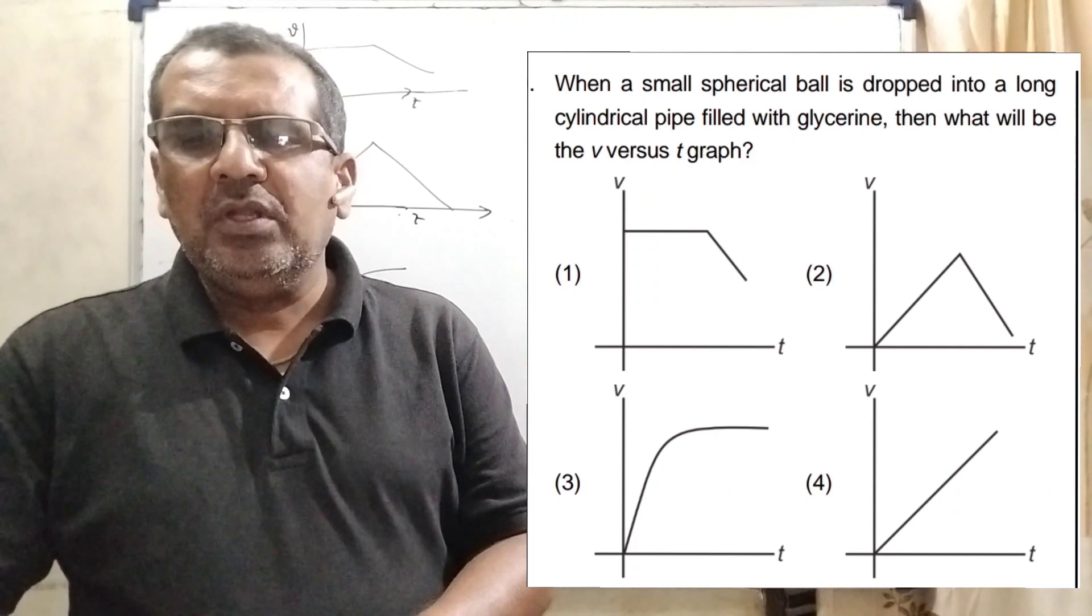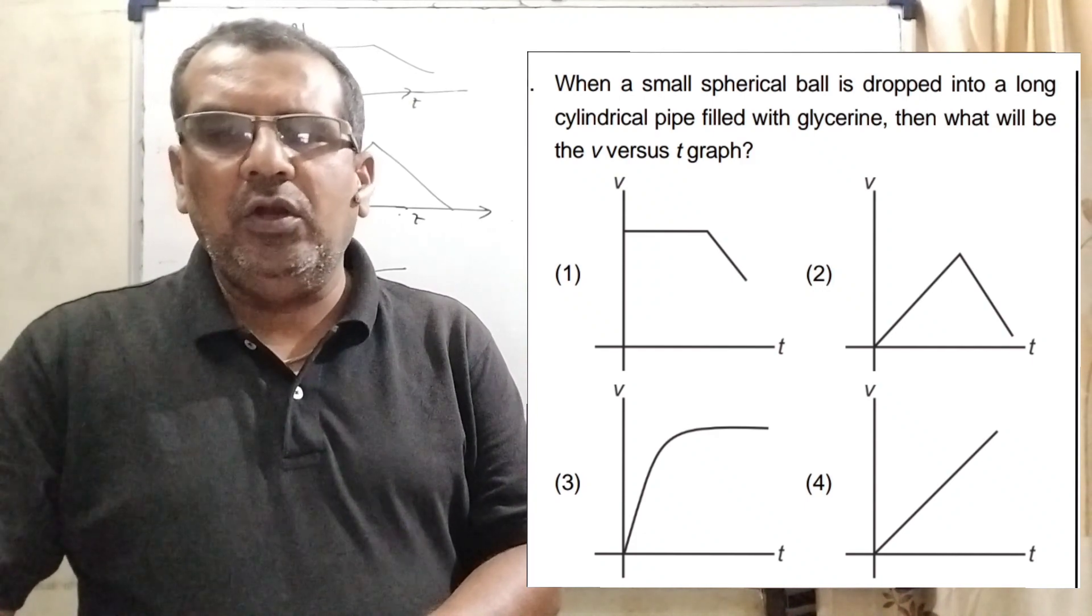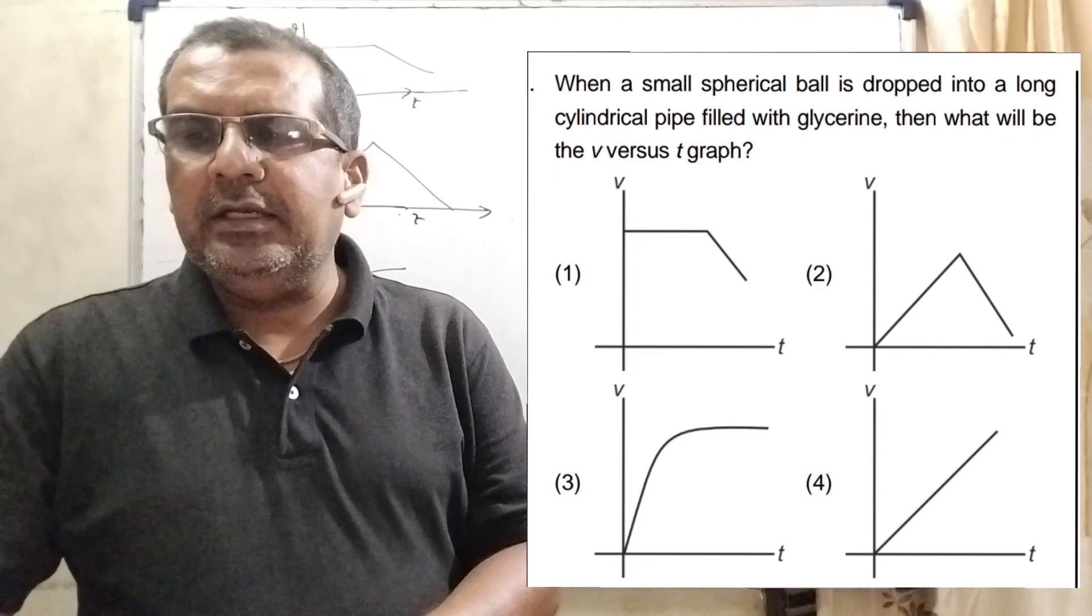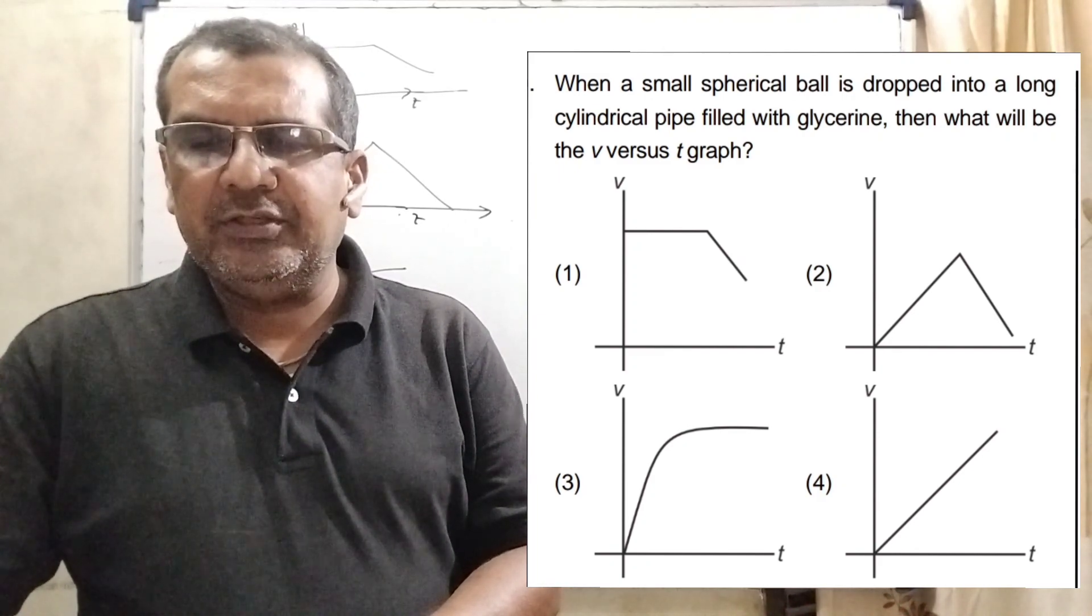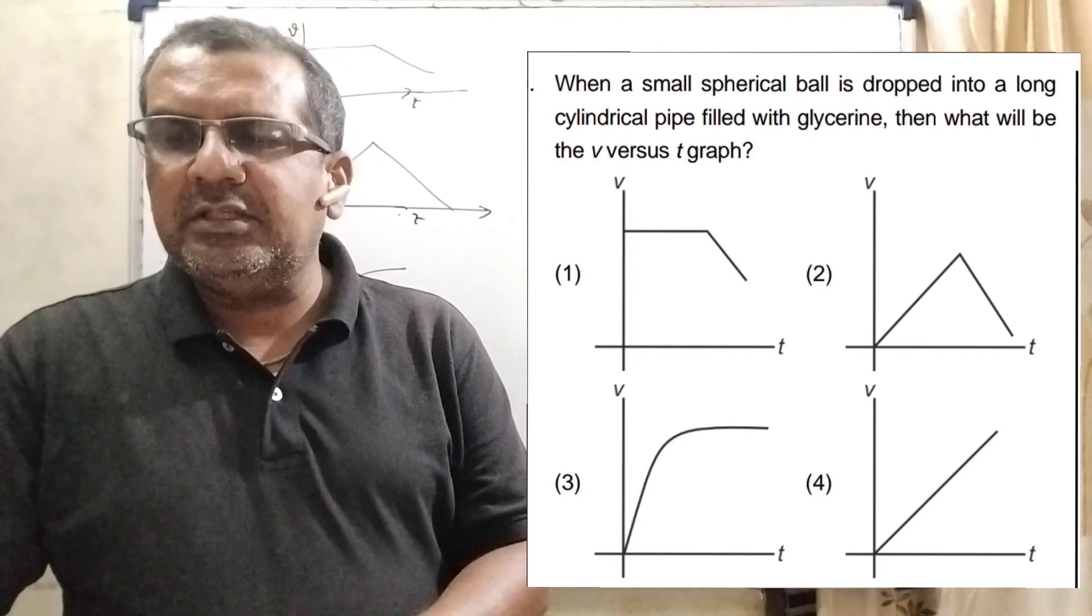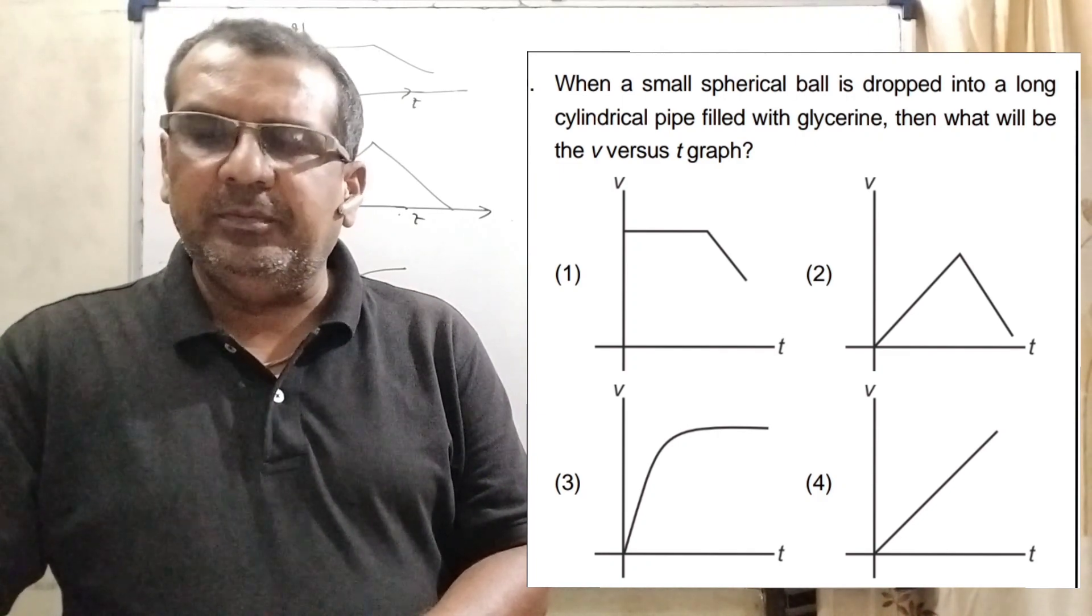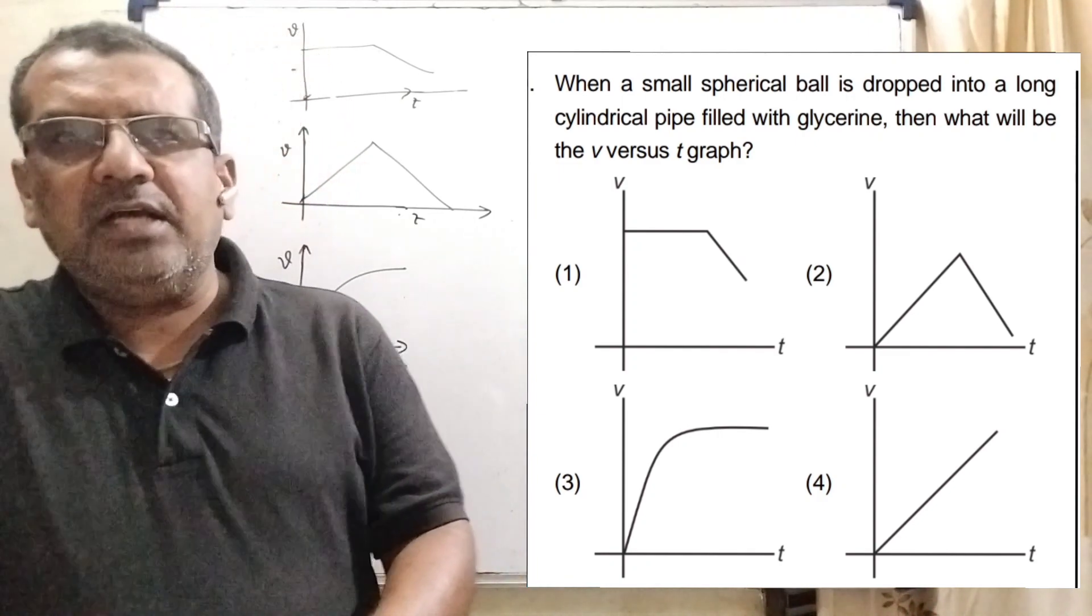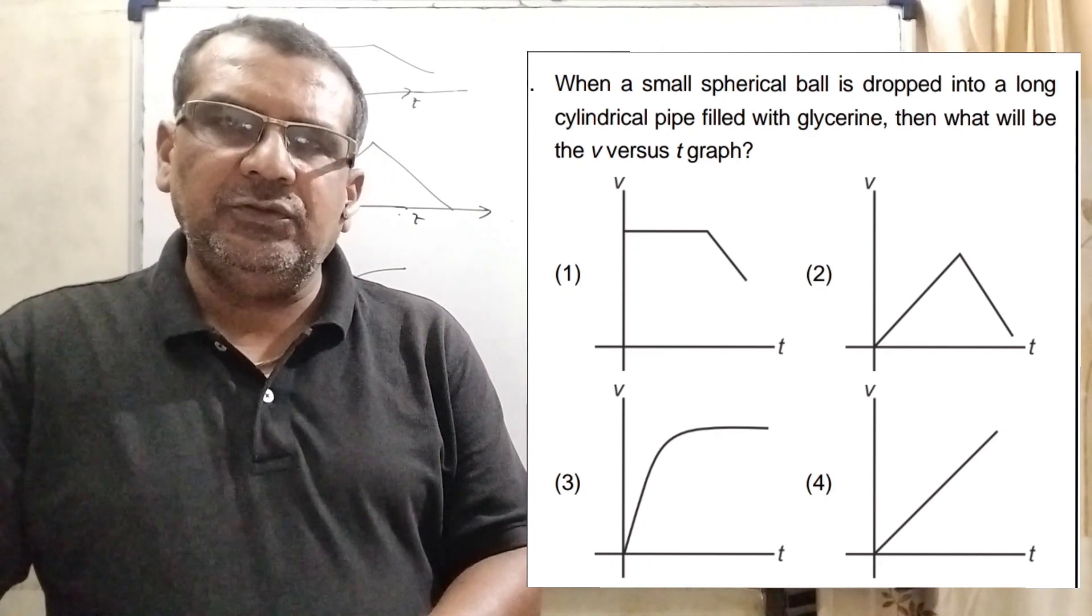Now here is the question. A small steel ball is dropped into a long cylinder containing glycerin. Which one of the following is the correct graph? Here representation of the velocity time graph for the transit of the ball. This question is asked 31st January 2024 JEE Mains.